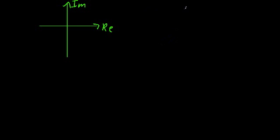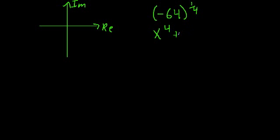Let's keep the ball rolling with another example. In this example, we're going to try and figure out what negative 64 to the one-fourth power is, or the fourth root of negative 64. We can assume that this came from a polynomial like x to the fourth plus 64 equals zero. In a polynomial like this where the degree n equals 4, there are going to be four different solutions, and those solutions may be complex.